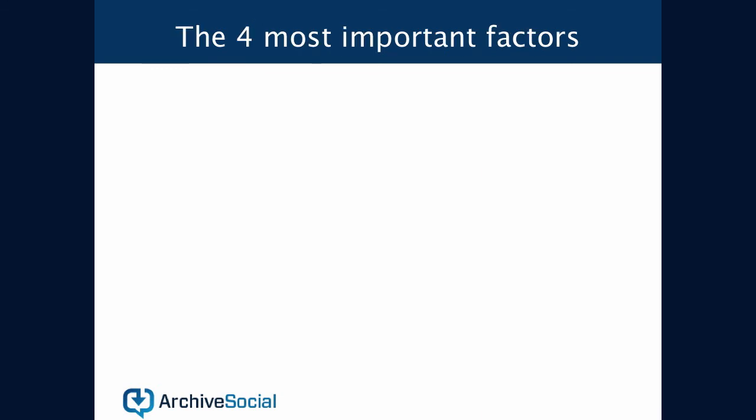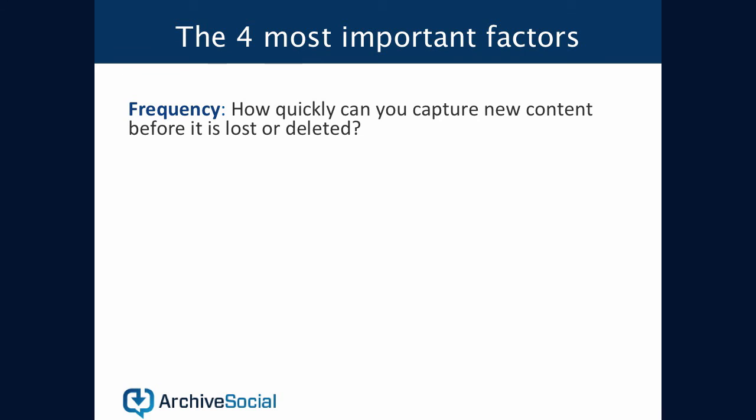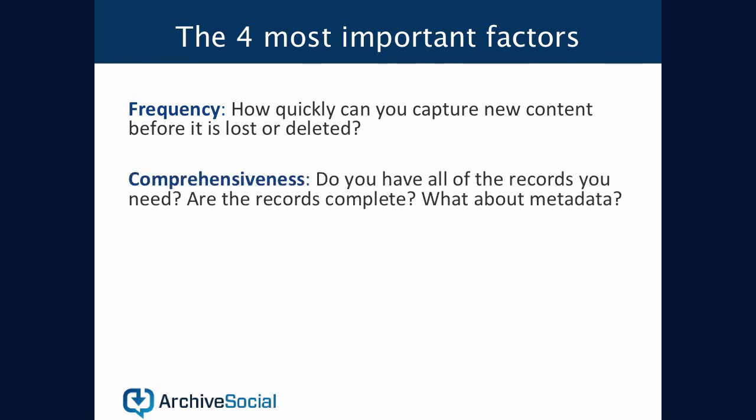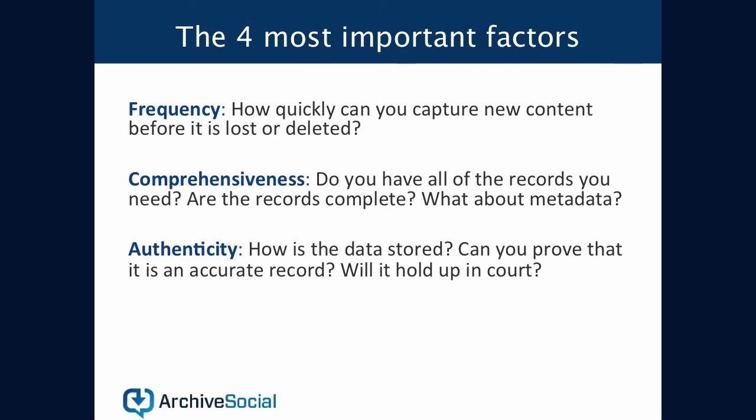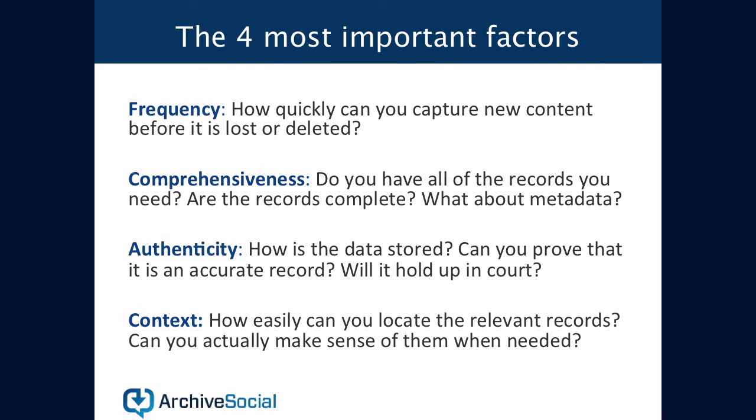We've now seen a handful of approaches and they each have their own drawbacks. So what critical factors might we consider when searching for an ideal social media archiving solution? It starts with frequency — because this data exists outside of our control, we have to think about how quickly we can capture new content before it's potentially lost or deleted from the social network. We have to consider comprehensiveness: does the solution capture both sides of the conversation, full-resolution photos, the entire conversation thread, and the metadata we might need in a legal situation? Speaking of legal situations, we have to ensure authenticity — is the data captured in an authentic fashion from the social network in its native format without data conversion, and can these records potentially serve as legal evidence? And last but not least, do we have the context we need? Can we make sense of these records and replay the conversations as they originally appeared on the social network? After all, there's no sense in storing data if you can't easily access it and make use of it.